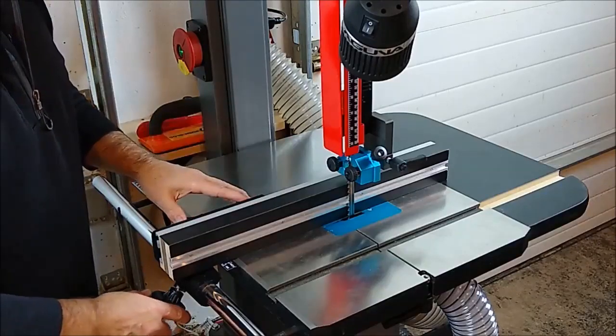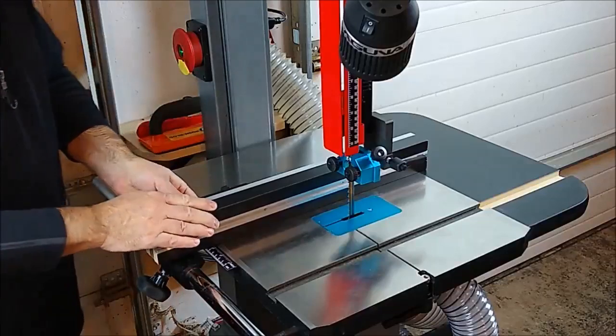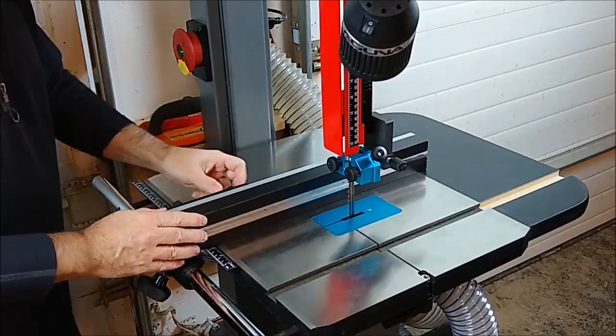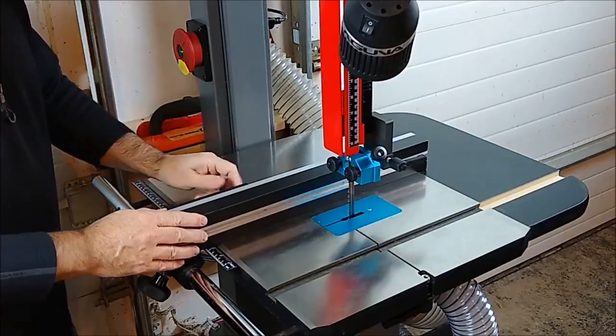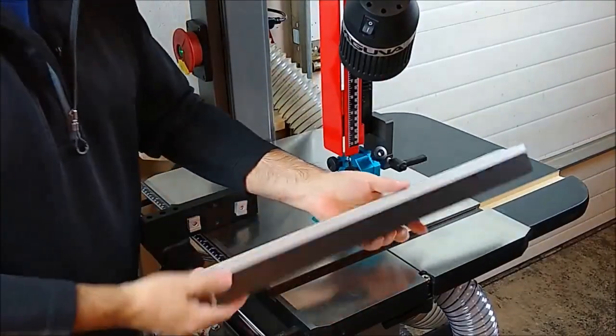If you do have to do some resawing, then you can still use the tall resaw fence. Just a matter of loosening up the two factory knobs, sliding the fence off and you can take a look at what you have.